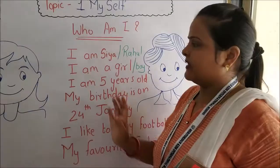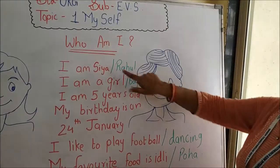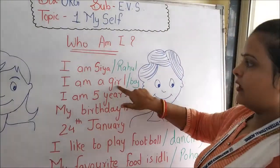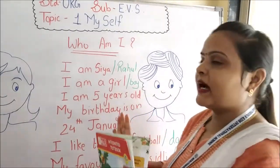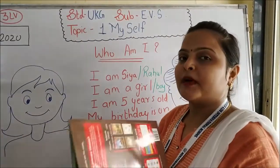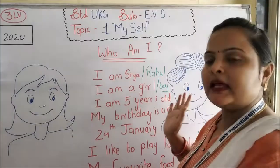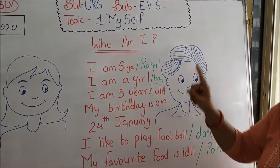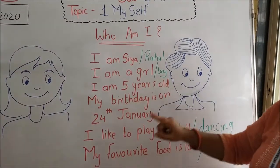So let's start our Myself. I am Siya. I am Rahul. I am a girl. I am a boy. Aapko agar aapka naam Siya hai, Ashrangi hai, Rahul hai, tho aapko aapke naam likhna hai. Second one: I am a girl — agar aap girl hain tho girl likhna hai. Agar aap boy hain tho boy likhna hai.